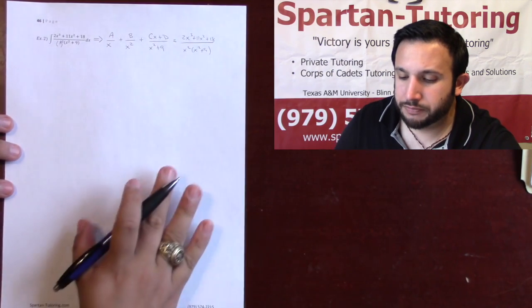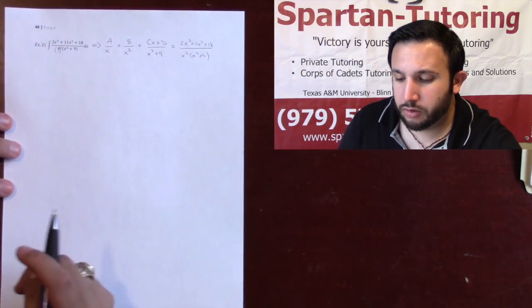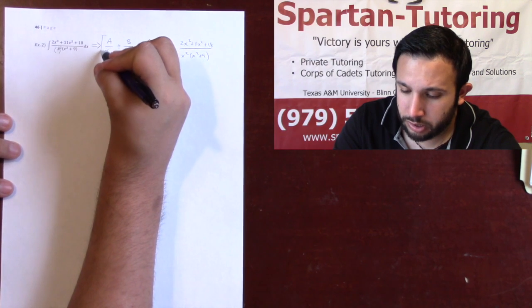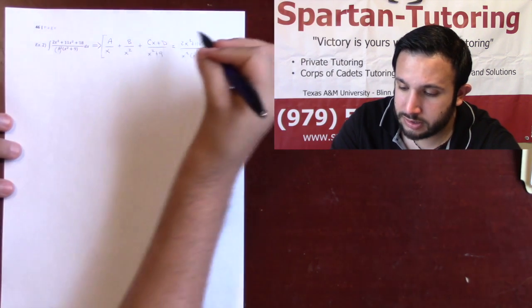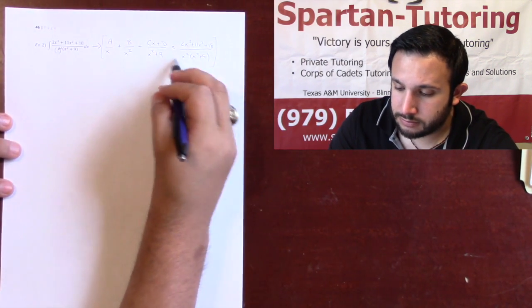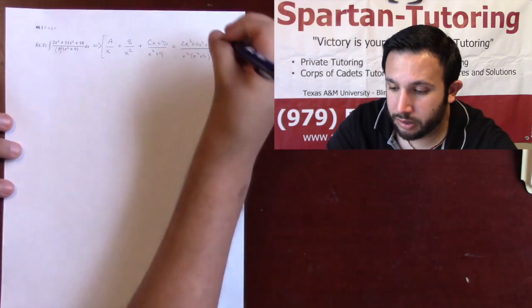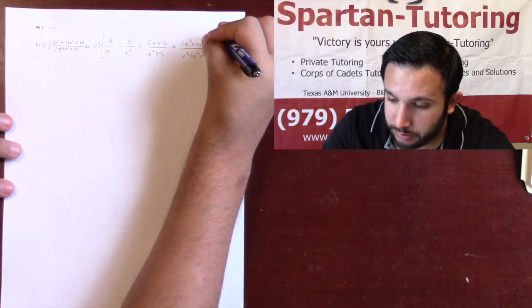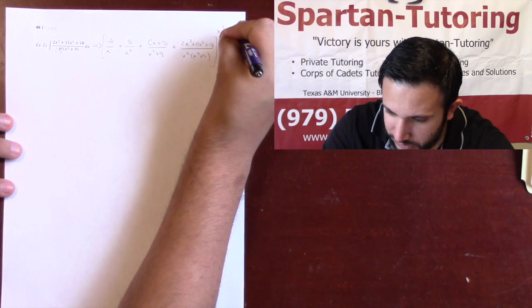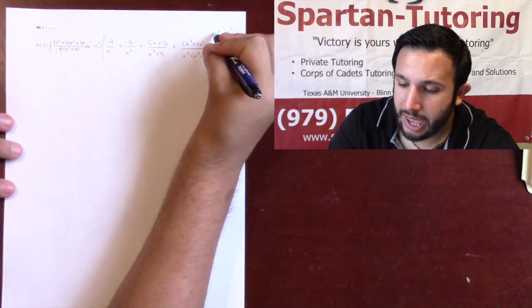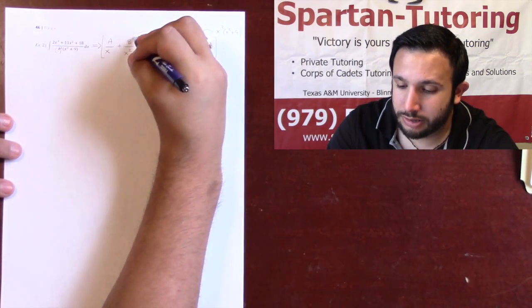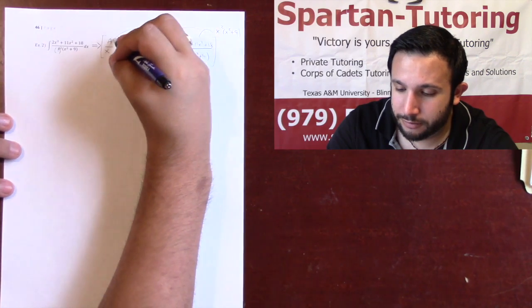What we need to do is solve for A, B, C, and D. The way you get rid of the fractions is to multiply both sides by that original denominator — x squared times x squared plus 9 — and distribute that into each term.